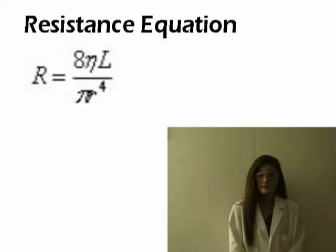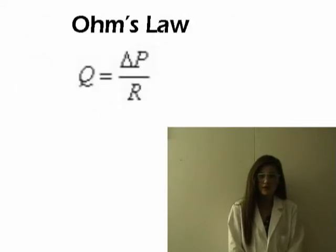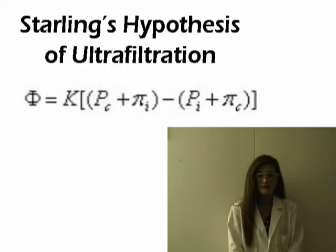After we dissected the organs, we inserted a catheter into the aorta and perfused a perfusate through the system. In this experiment, three different equations will be used: the first is the resistance equation from Ohm's Law, and the other equation used was Starling's Law hypothesis.